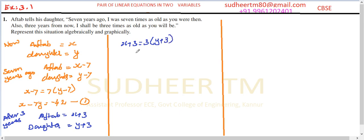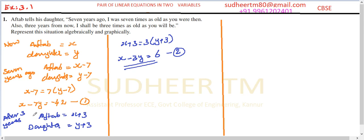Expanding: X plus 3 equals 3Y plus 9. Moving 3Y to the left and 3 to the right gives X minus 3Y equals 6. This is equation number two. So we have two algebraic equations: X minus 7Y equals minus 42, and X minus 3Y equals 6.